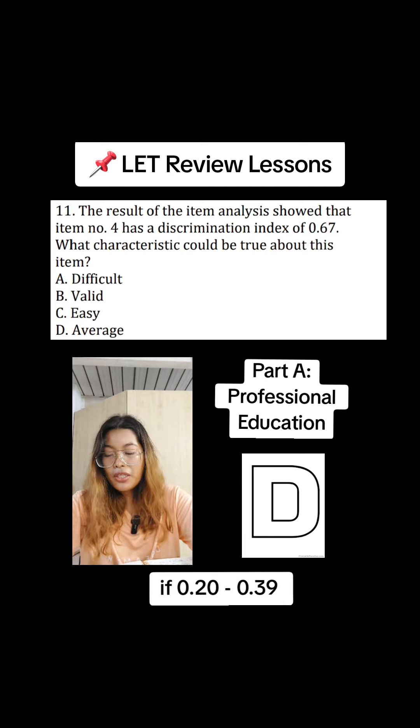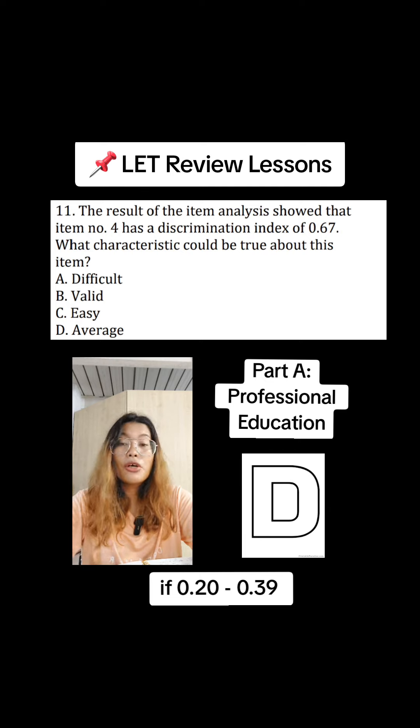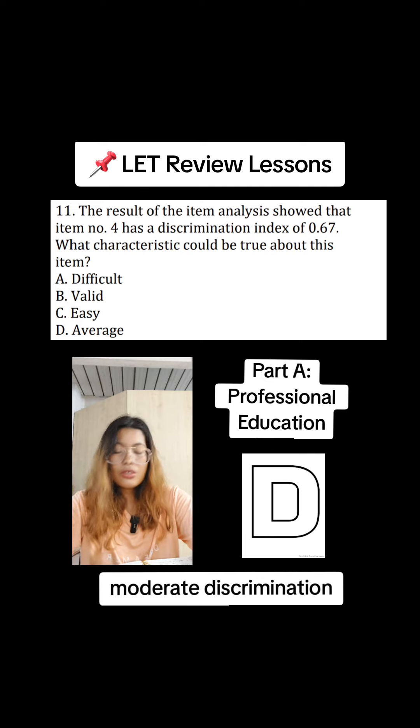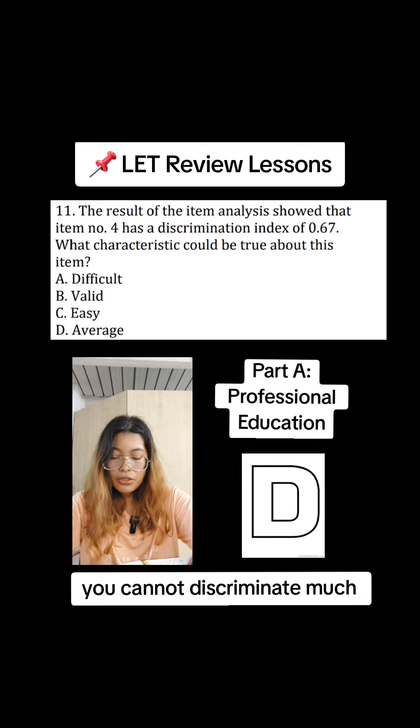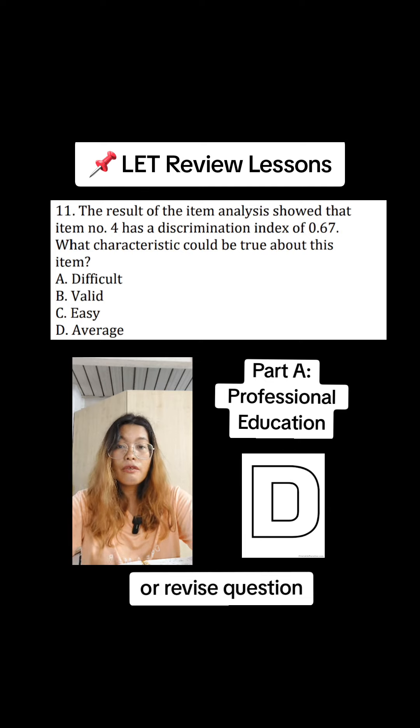If it's 0.20 to 0.39, moderate discrimination, you cannot discriminate much. Moderate discrimination. So you check or you revise your question.